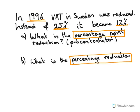It actually became 12%, and it's the same rate we're paying today. All items of food that we buy in Sweden, we are paying 12% tax on, and the price we pay in the shop already includes that 12%. So the question is: what is the percentage point reduction?